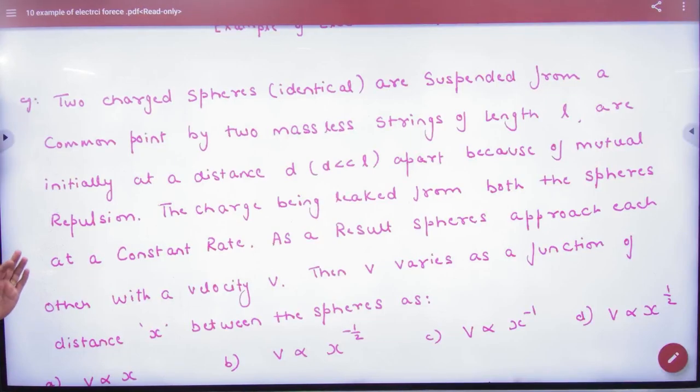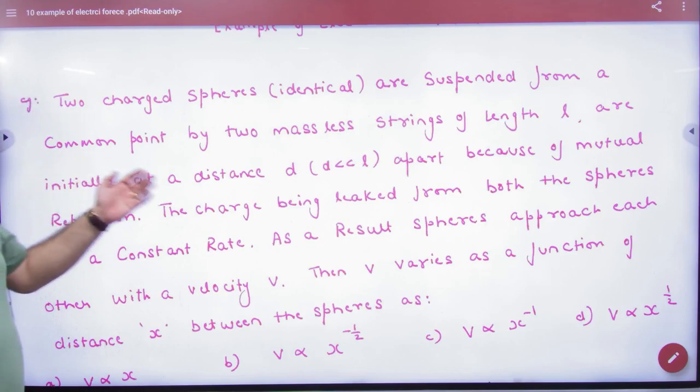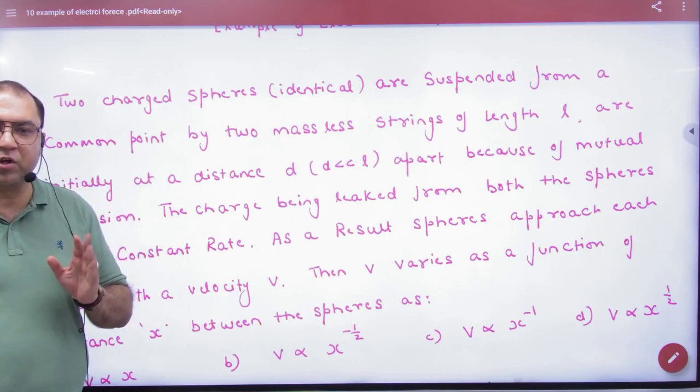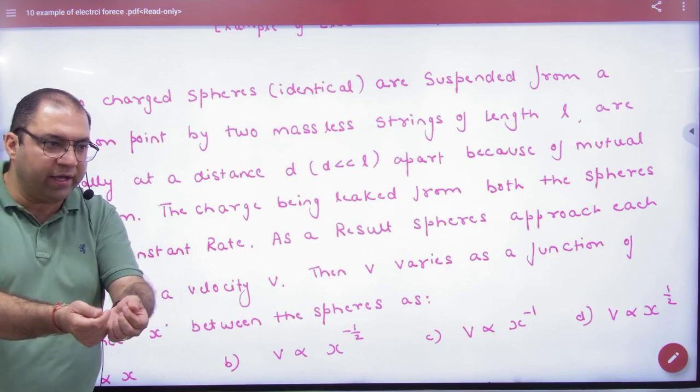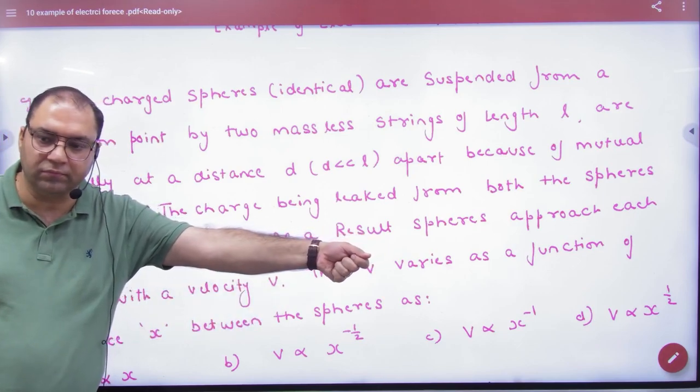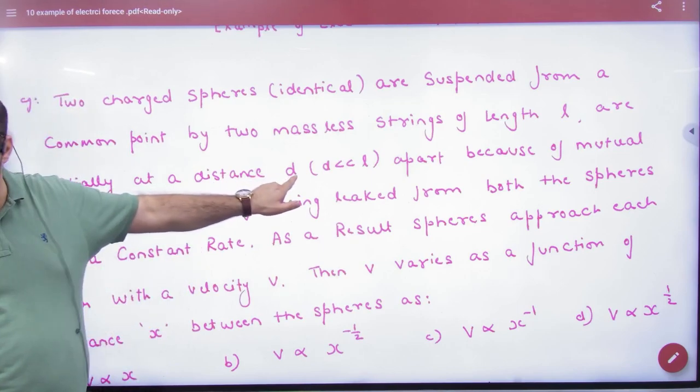The question is: two charged identical spheres are suspended from a common point by massless strings of length L. Both have charge Q and Q, so they repel. What was the initial distance between them? D.